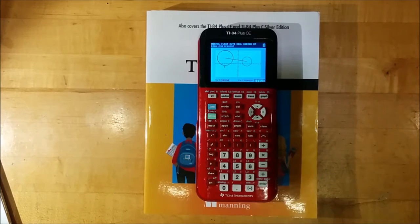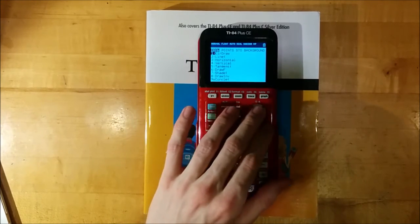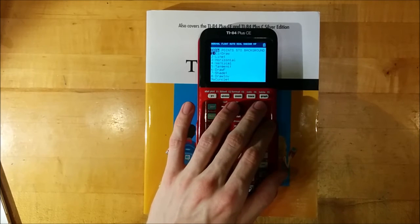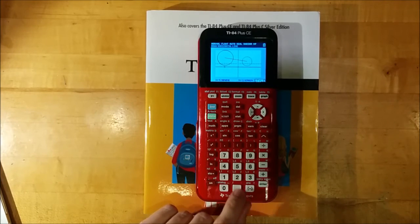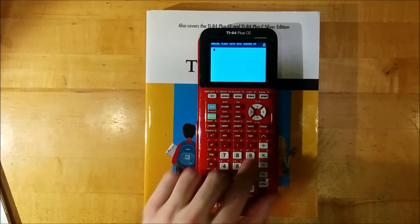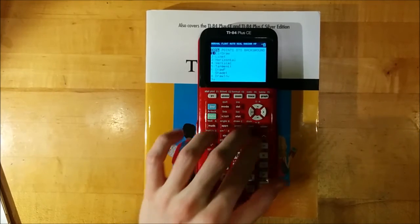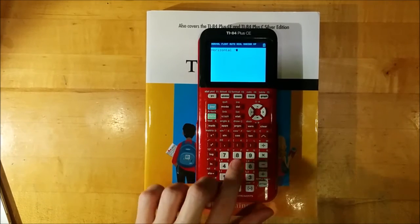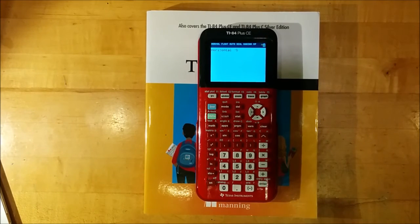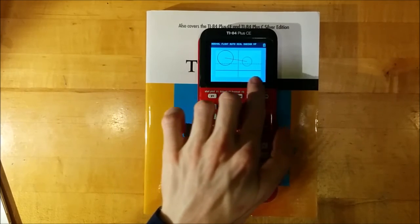You can also select actual specific points for these drawing features. So let's say I wanted to draw a horizontal line. I can specify that I want to draw this horizontal line at exactly negative five by going to second draw from the home screen, selecting horizontal and then typing negative five. When I press enter, you'll see that horizontal line is drawn at negative five.